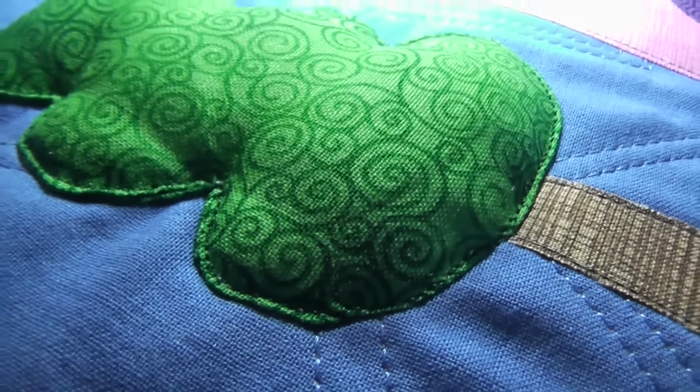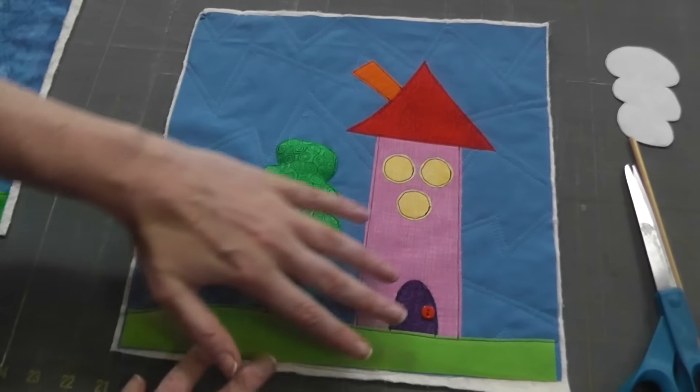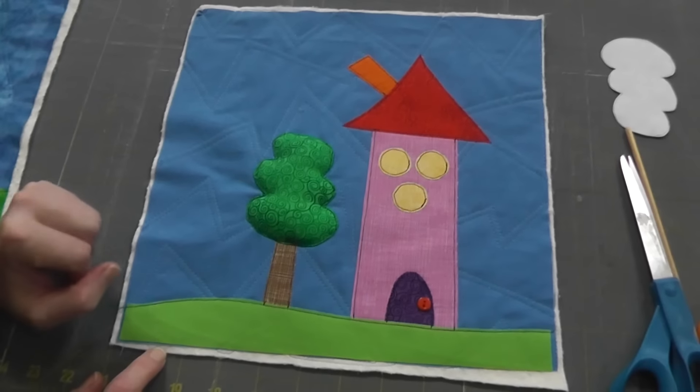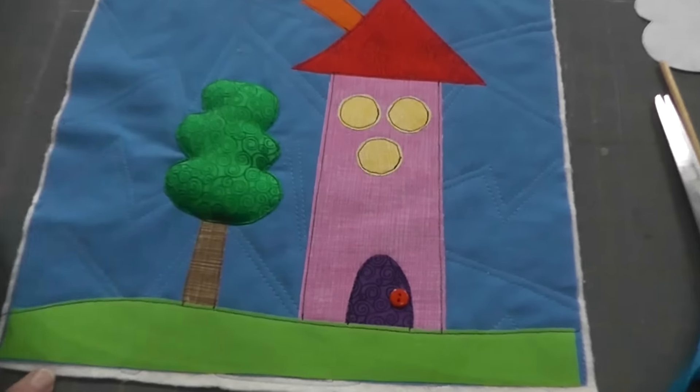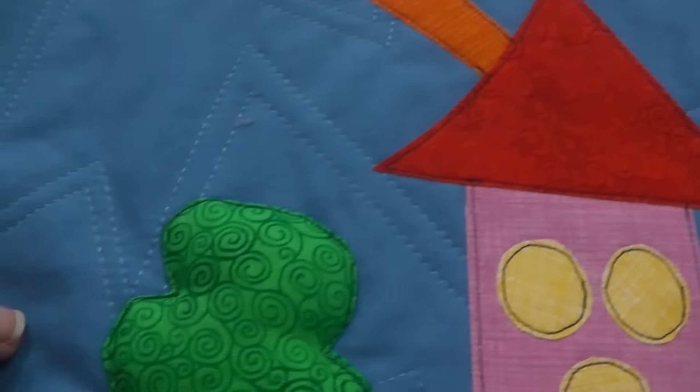So let's go back to the table where the light's a little bit better and I'll show you the finished block. Here's the finished block. We've got all the flat applique on the house, and you can see that black outline that I was talking about. And then you can zoom in and see that you've got this puffy, happy little tree.